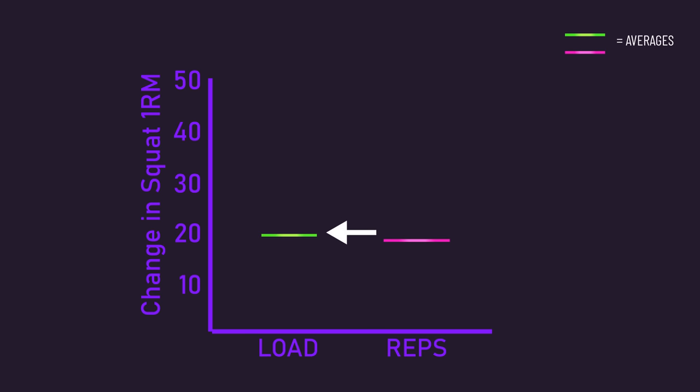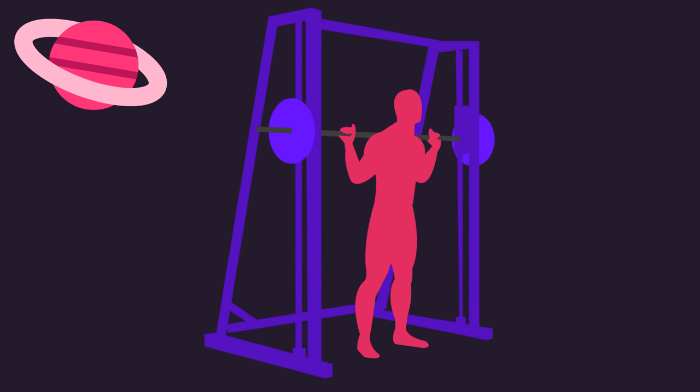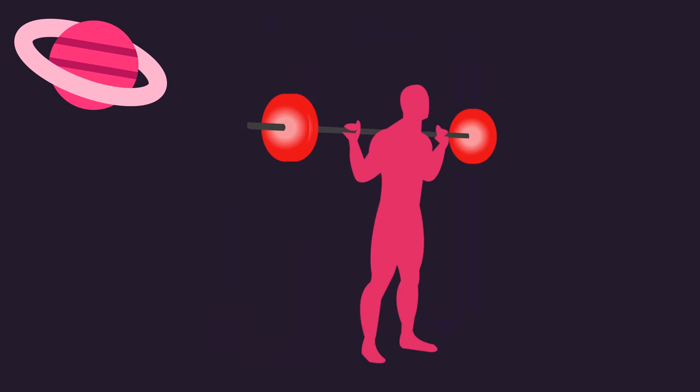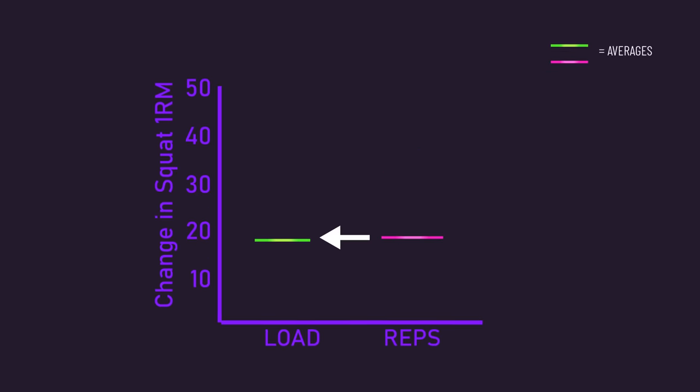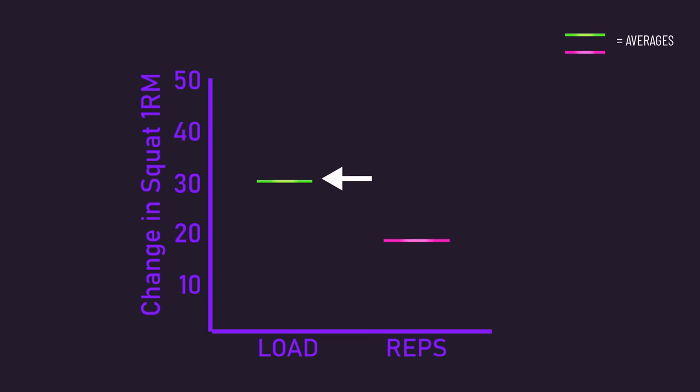The lack of differences in strength may have something to do with the fact the test was conducted on a smith machine squat. Neither group trained with a smith machine squat, rather a free weight squat, and so perhaps this strength test was too nonspecific. If one rep max free weight squat was tested, maybe strength gains would have been more notably superior for the load group.